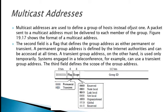The multicast address is used to define a group of hosts instead of just one. A packet sent to a multicast address must be delivered to each member of the group, as shown in the figure. The second field is a flag that defines the group address as either permanent or transient. A permanent group address is defined by the internet authorities and can be accessed at all times. A transient group address, on the other hand, is usually only temporary — a system engaged in teleconference, for example, can use a transient group address.